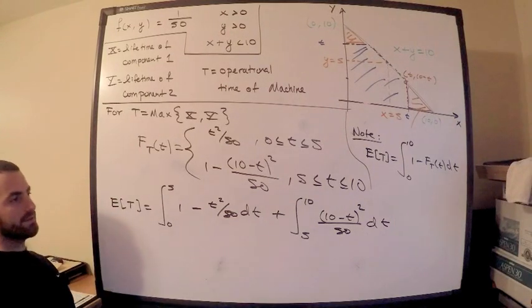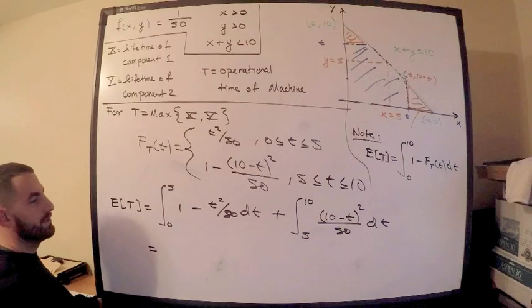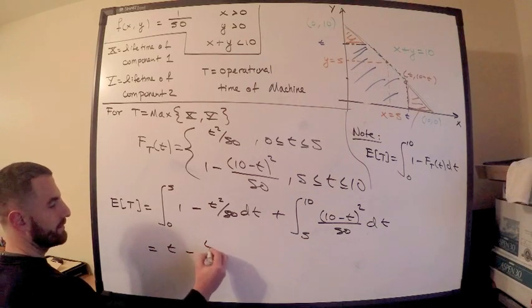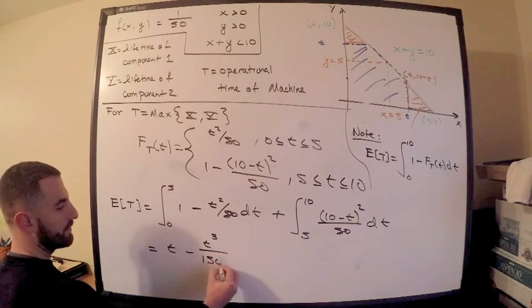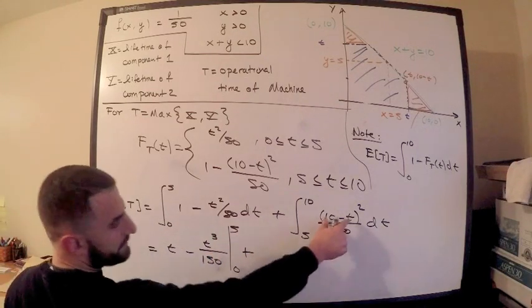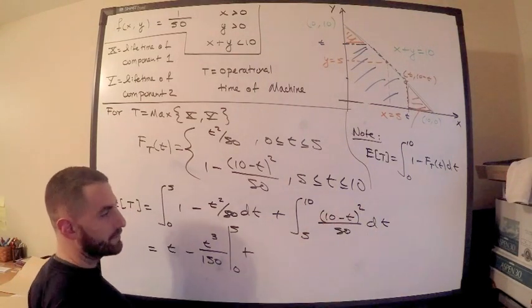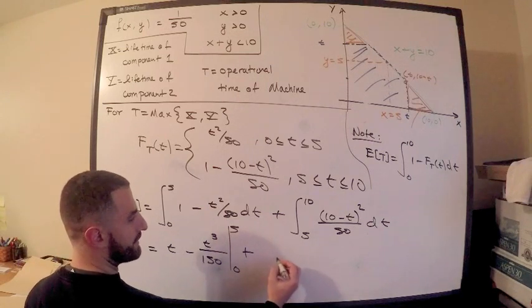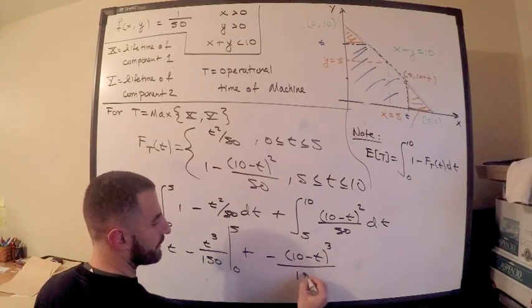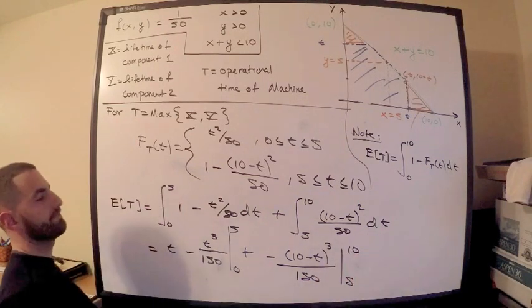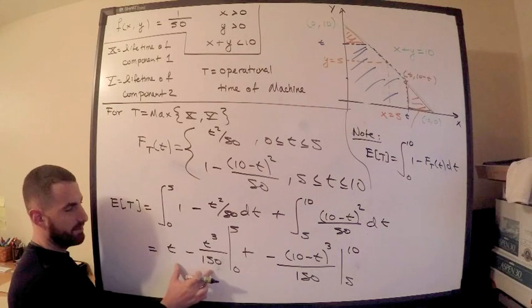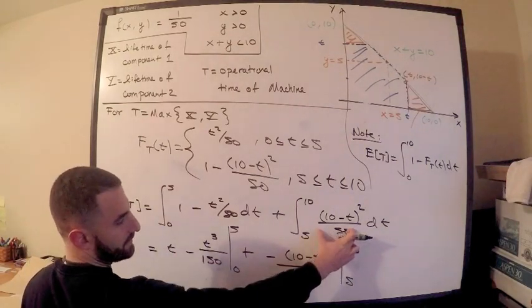We can compute this. This is not too bad. This is just calc 1, basically, right? This is equal to, now, this is t. This is going to be minus t cubed divided by 150, using the power rule in reverse, going from 0 to 5, plus, do not expand this. Just basically do a u-substitution without doing it, right? You need to be comfortable with this sort of thing. This is going to be negative, negative 10 minus t cubed divided by 150, going from 5 to 10. If you're concerned about that sort of thing, you can always differentiate and make sure you get the integral back. So this one checks out. This one also checks out. This one checks out as well. If I distribute, if I try to bring the 3 down, subtract from the exponent, multiply by the derivative of the inside, negatives cancel, right? So I get exactly what I want.